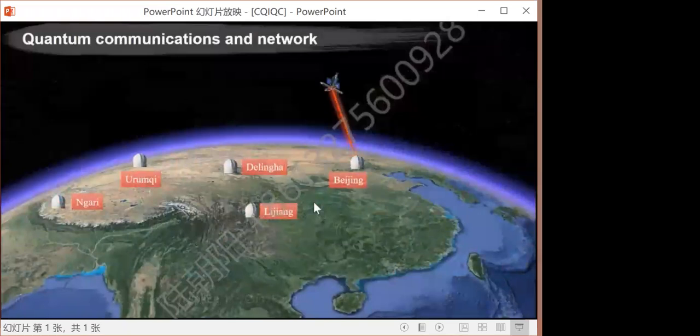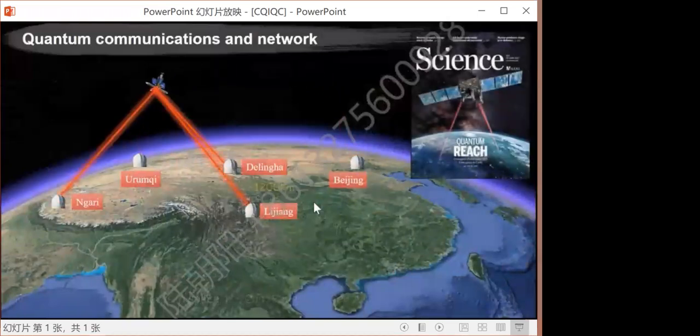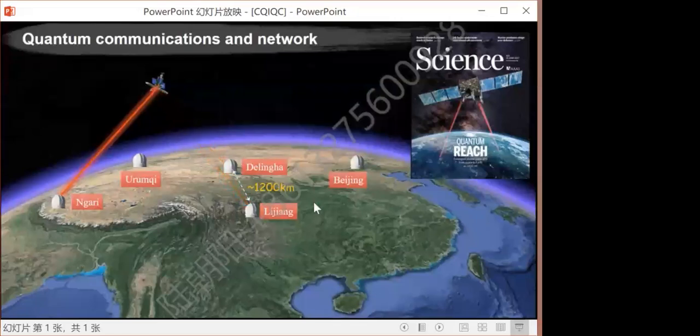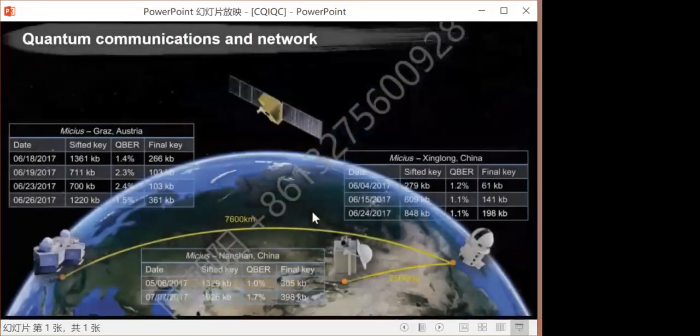Based on the satellite, we have demonstrated satellite-to-ground quantum key distribution, entanglement distribution, and ground-to-satellite quantum teleportation over 1,000 kilometers. Using the satellite as a trusted relay, intercontinental QKD between Beijing and Vienna was also done, with a distance of 7600 kilometers.